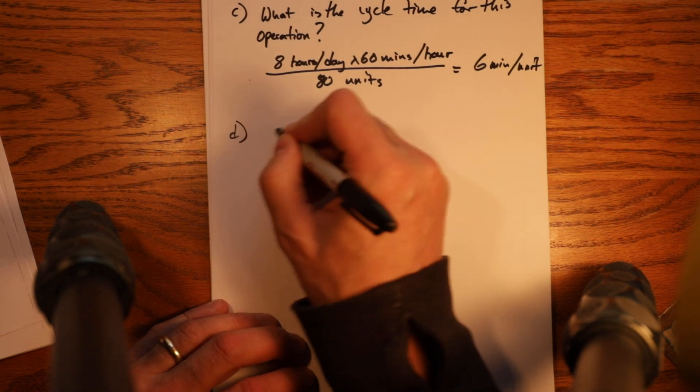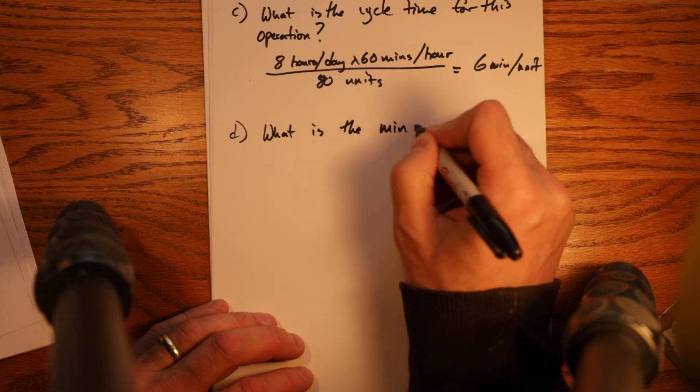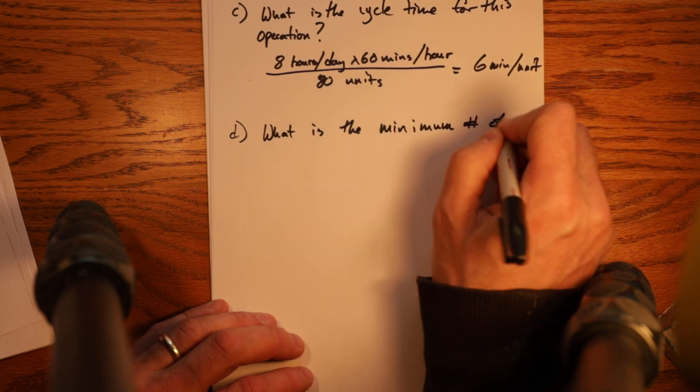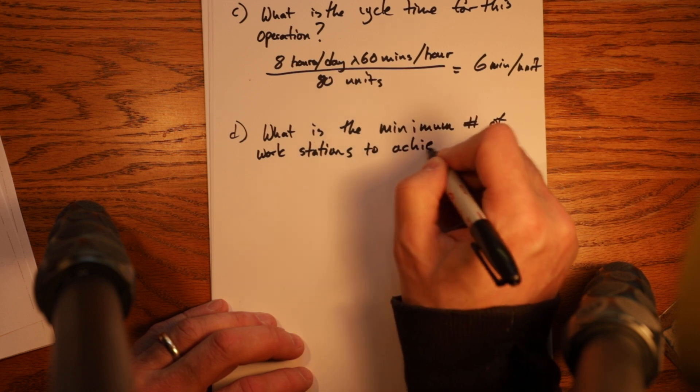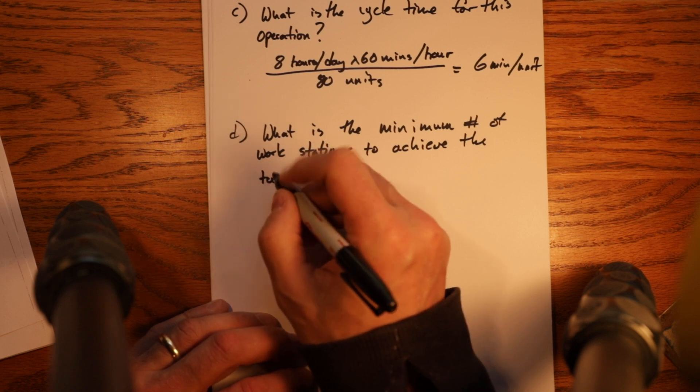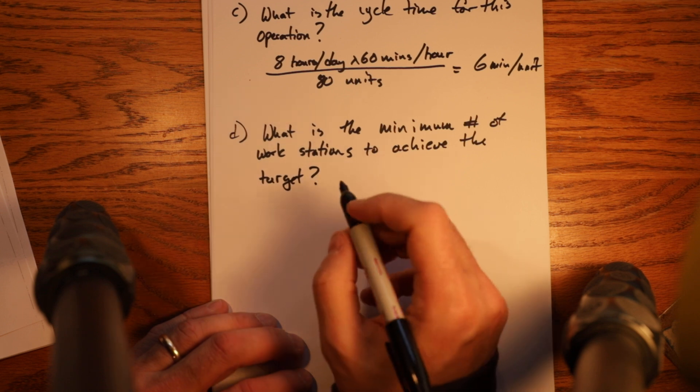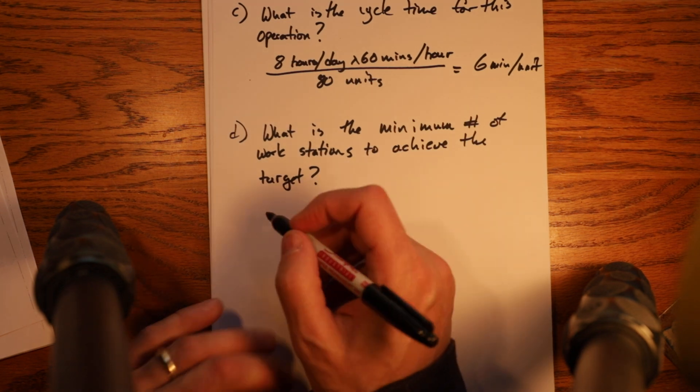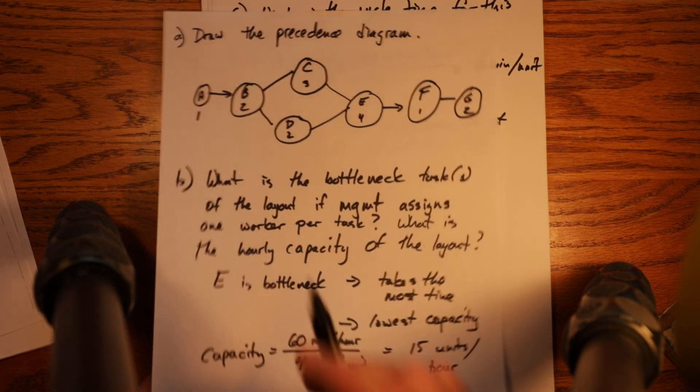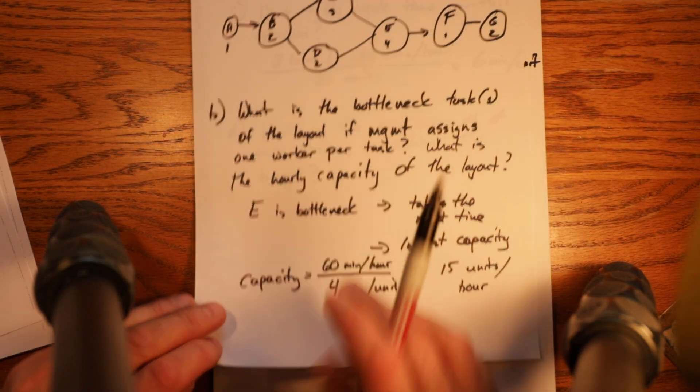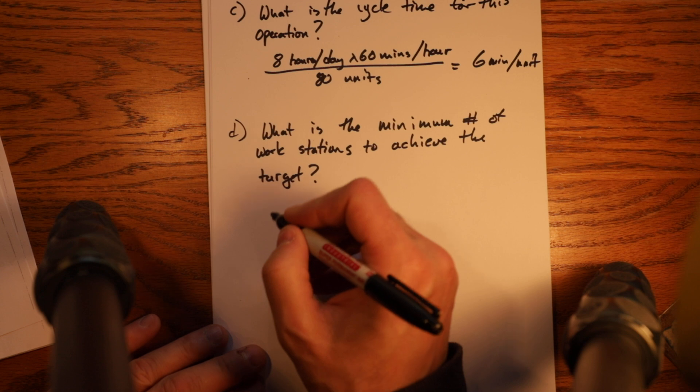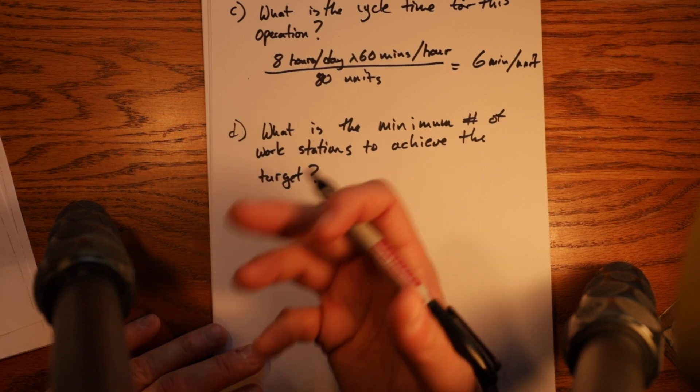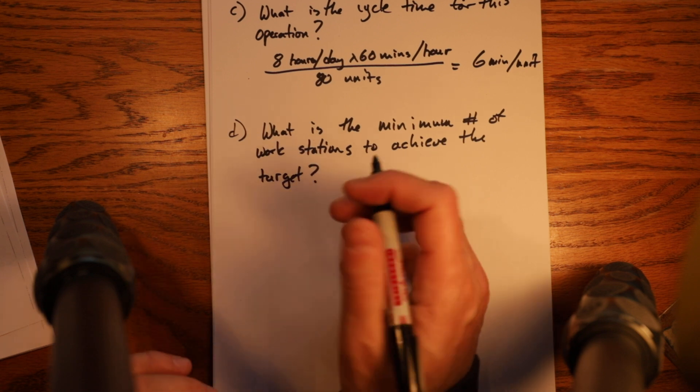So the next question then becomes: What is the minimum number of workstations to achieve the target? If we want to produce one every 6 minutes, what is the minimum number of workstations? Rather than saying one, two, three, four, five, six, seven individual workstations, can we put some of those tasks together and achieve a higher degree of efficiency? What we're looking at is the minimum number. The minimum number is the theoretical ideal. We can't always achieve it because of precedent relationships and things like that, but this gives us a guideline, a benchmark.